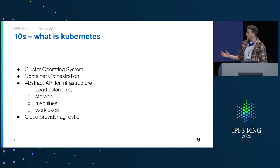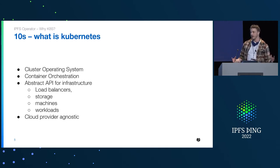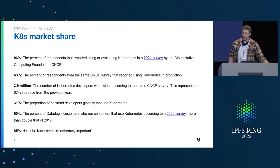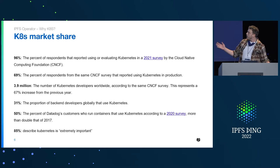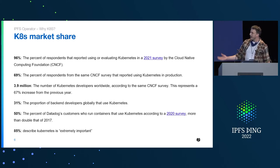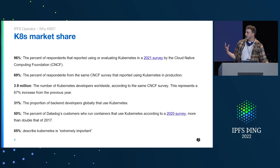Another reason why this is a good target that makes it so popular is that it's ubiquitous. Every cloud provider you can think of probably has a Kubernetes implementation, and you can take your Kubernetes applications and run them there. Like 3.9 million developers — that is a huge amount. 31% of back-end developers globally are using Kubernetes, and we want to make this a target where they can run IPFS.